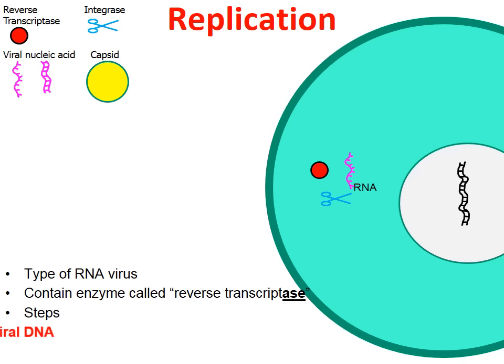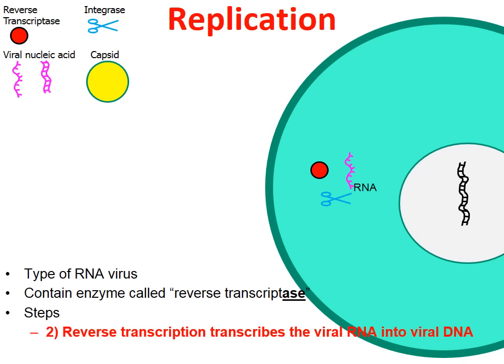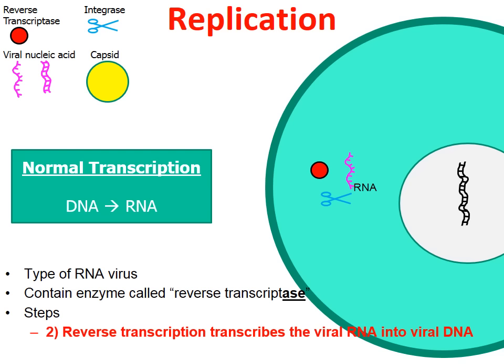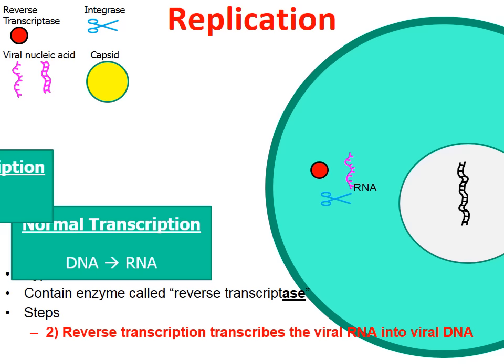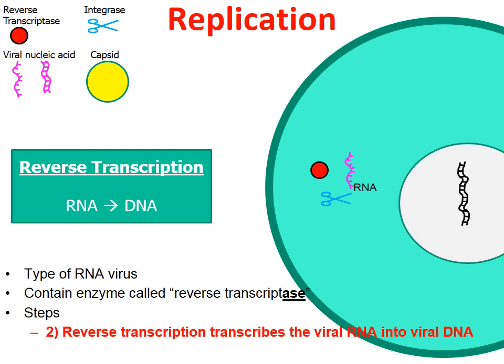The next step is the process of reverse transcription. Normally, transcription means a DNA molecule is used to create an RNA molecule. However, retroviruses, because they have the enzyme called reverse transcriptase, are able to perform transcription in reverse. Reverse transcriptase will bind to the virus RNA and perform reverse transcription — the viral RNA will be used to build a molecule of viral DNA. Eventually reverse transcriptase is degraded and broken down, but the retrovirus has created viral DNA for itself.